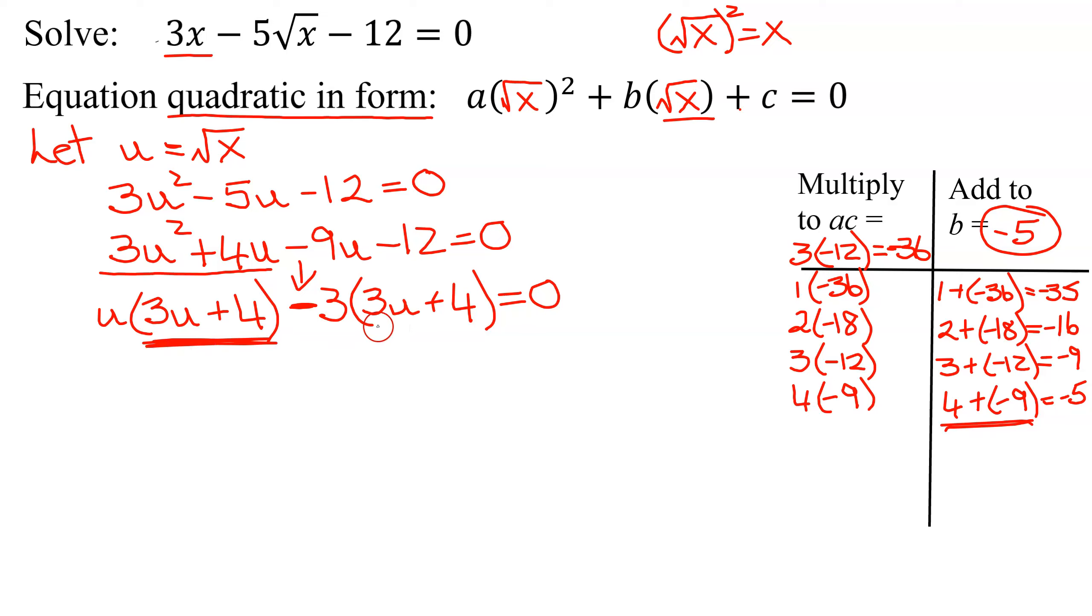Now, is this binomial the same as this one? Yes, that's your common binomial factor. You factor in front, and what does it leave behind? u minus 3.